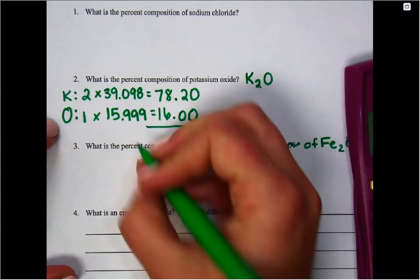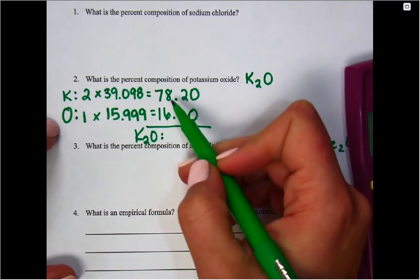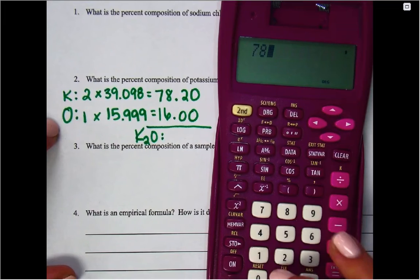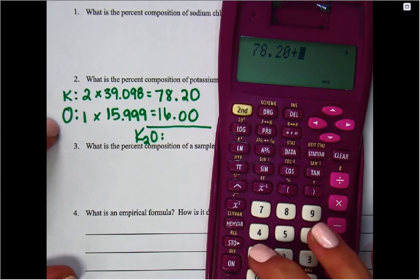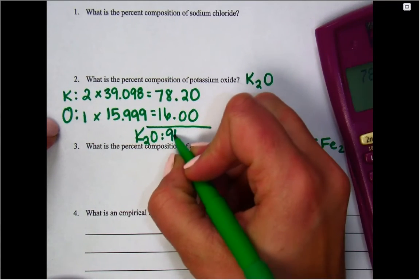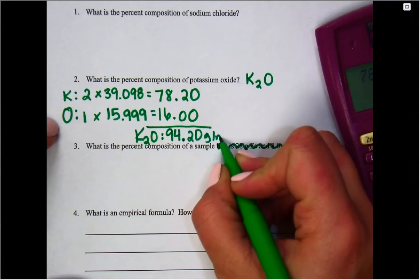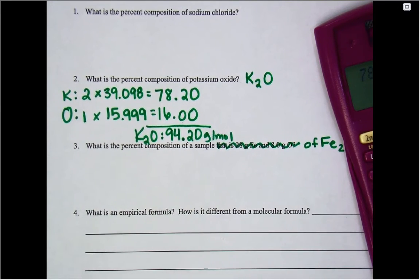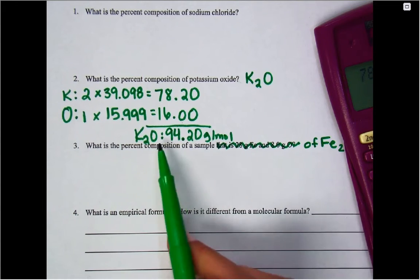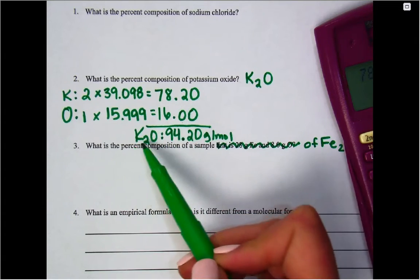So what we have here is our mass of potassium, our mass of oxygen in potassium oxide. Now we need the total mass. So this is our K2O. That means we're going to add those two values together. So I'm going to add together 78.20 plus 16.00. We're going to get 94.2 as our answer. So our molar mass of this is 94.20 grams per mole. So that's step one. You got to figure out how much mass each element is contributing and the overall mass. So there's our parts. There's the whole.